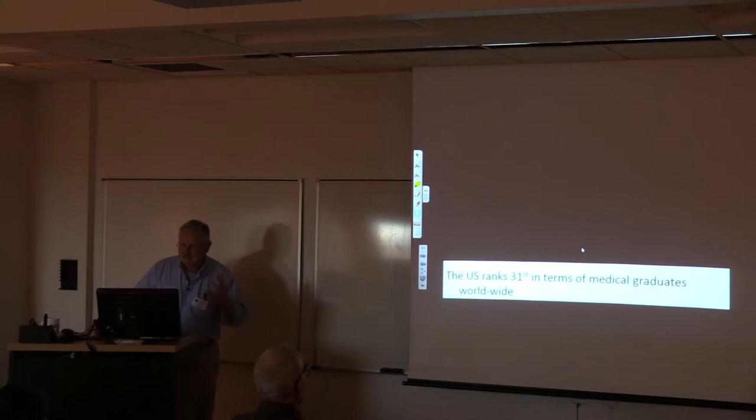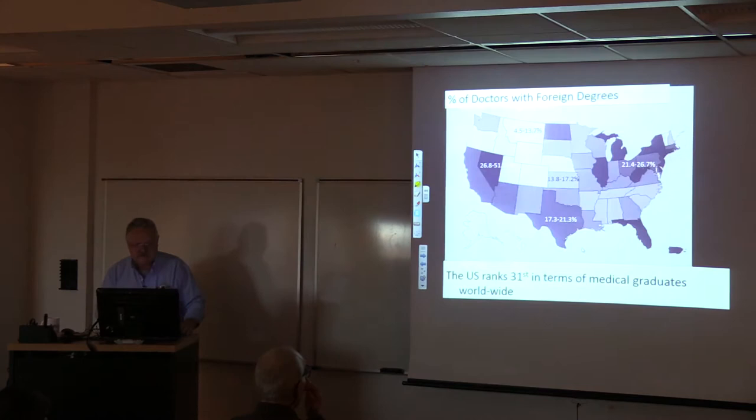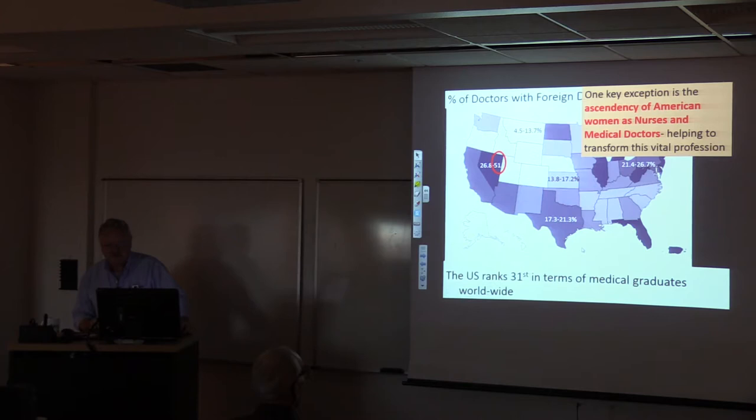If we look at the U.S. in a medical dimension, it ranks 31st in terms of medical graduates worldwide. Where doctors come from, a lot of them come from outside the U.S. If we look at the percent of doctors with foreign degrees, Montana doesn't have many people with foreign degrees. But if you look at Nevada, in some counties, 50 percent of the doctors come from another country because they couldn't find domestic doctors to fill those jobs. We need those immigrants. But why don't we have more people going into medical professions and science and all the related disciplines in biology? One key exception is the ascendancy of American women as nurses and as medical doctors. That's helping to transform this profession in a very positive way.